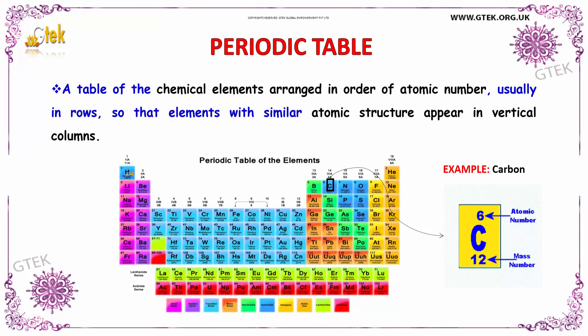Hydrogen has an atomic number of 1, lithium has an atomic number of 3, sodium (Na) has an atomic number of 11, and potassium has an atomic number of 19. So it goes on for every element.